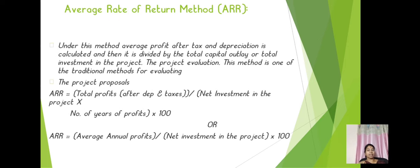Next, under the traditional method, we have the average rate of return method. Under this method, average profit after tax and depreciation is calculated and then divided by total capital outlay or total investment in the project. The formula is: ARR = Total Profits (after depreciation and tax) divided by Net Investment in the project, multiplied by the number of years of the project, into 100.